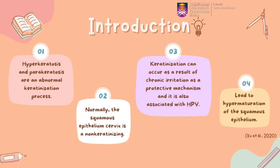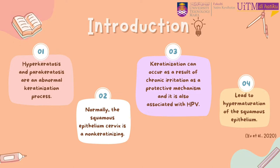Hyperkeratosis and parakeratosis are an abnormal keratinization process. Normally, the squamous epithelium of the cervix is non-keratinizing. Keratinization can occur as a result of chronic irritation as a protective mechanism, and it is also associated with HPV infections. The keratinization process occurs at the stratum granulosum, which leads to hypermaturations of the squamous epithelium.